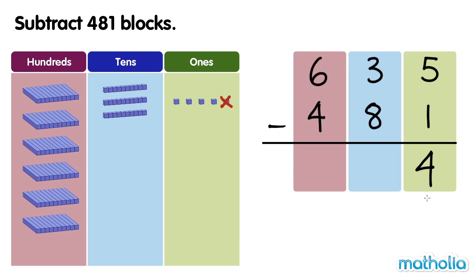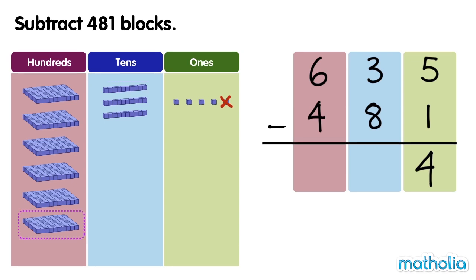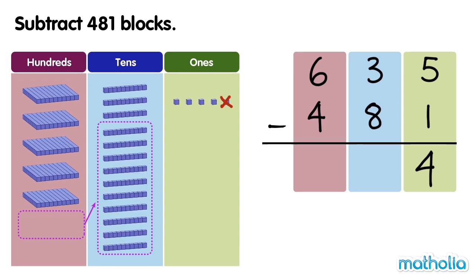Next, subtract the tens. We cannot subtract 8 tens from 3 tens, so we regroup 1 hundred into 10 tens. Now we have 5 hundreds and 13 tens. Now we can subtract the tens.